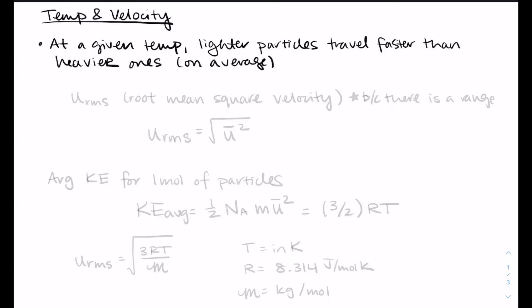It's U_RMS for the root mean square velocity. We do this because there's a range of velocities. Every particle will not be traveling the exact same velocity. There will be some kind of range. The root mean square is what it sounds like: it's the square root of the square of the average of the velocities. I'm not going to ask you to get each of those velocities and average them and come up with this, but that's how we get this.